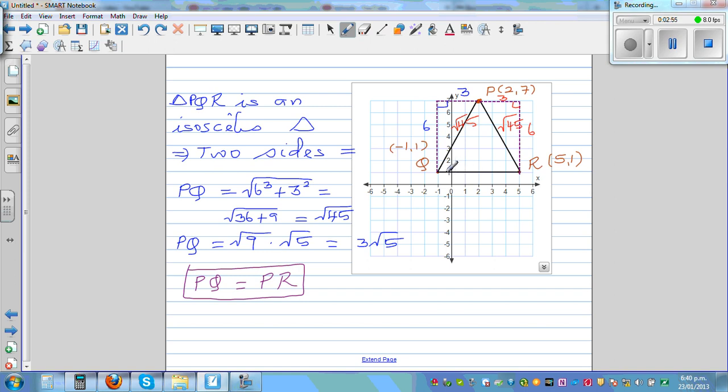Now what's the length of this? This is very easy. The distance from Q to R is 1, 2, 3, 4, 5, 6.